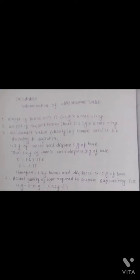Calculation - Determination of displacement value. First, weight of tannic acid is 0.2 into 6 suppository mass equals to 1.2 gram. Second, weight of suppository base is 2 gram into 6 suppositories equals to 12 gram.